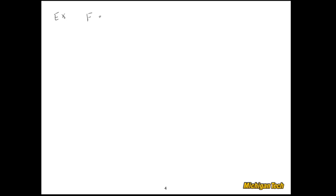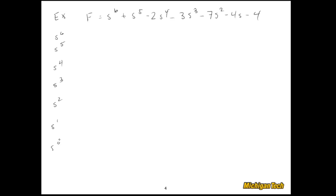So if this case occurs, we can extract the auxiliary equation and solve for its roots — meaning we'll know not only how many poles are in the right half plane or on the imaginary axis, but actually what they are. Here's an example: we extract a characteristic equation and want to analyze its stability. We start with s⁶ and set up the Routh array, filling in the even coefficients: 1, -2, -7, -4, and the odd coefficients: 1, -3, -4, 0.